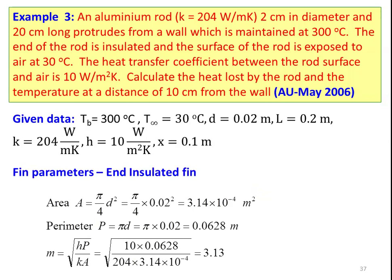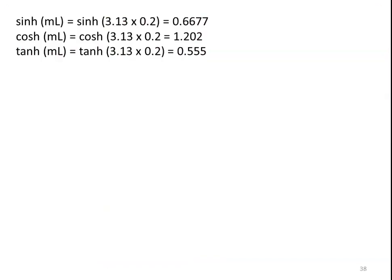We calculate the fin parameters for the end-insulated fin. The area of the fin is (π/4)d², which is (π/4) × 0.02² = 3.14 × 10⁻⁴ meter square. The perimeter of the fin for circular cross section is π × d = π × 0.02 = 0.0628 meter. The parameter M equals square root of (HP/KA) = square root of (10 × 0.0628) / (204 × 3.14 × 10⁻⁴), giving M = 3.13. We calculate sinh(ML) = 0.6677, cosh(ML) = 1.202, and tanh(ML) = 0.555 using the calculator's hyperbolic operator.